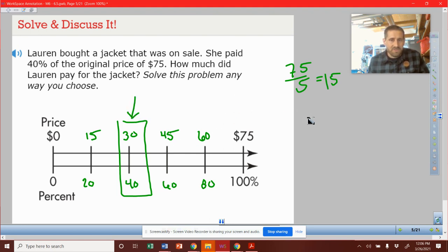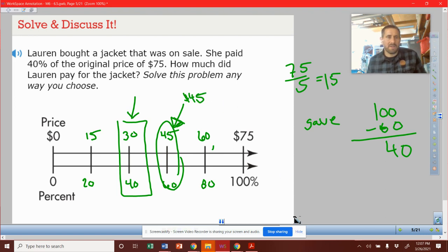My extra question is, how much money did she save? Well, if you had to pay 100%, but you only paid 40%, that means 60% was off. So if 60% was the discount, she got to save $45. Pretty good deal on a product. It's more than half off or more than 50%.